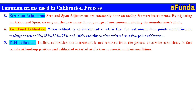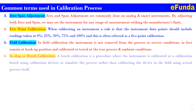Fifth is field calibration: the instrument is not removed from the process or service condition. It remains at the hookup position and is calibrated or tested at true process and ambient conditions. Sixth is in-shop or bench calibration: this is a procedure where the instrument is calibrated at a calibration bench using calibration devices to simulate the process, rather than calibrating in the field using the actual process itself.